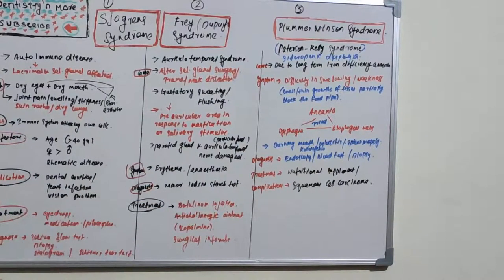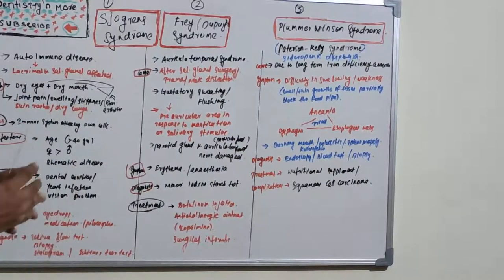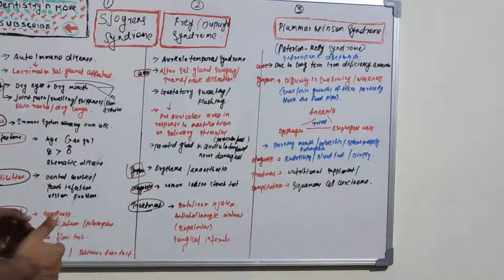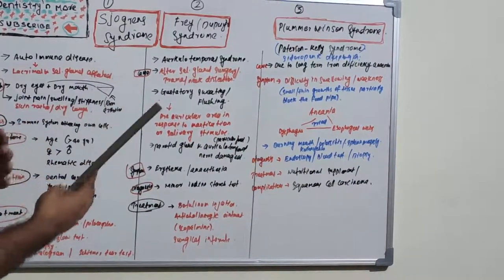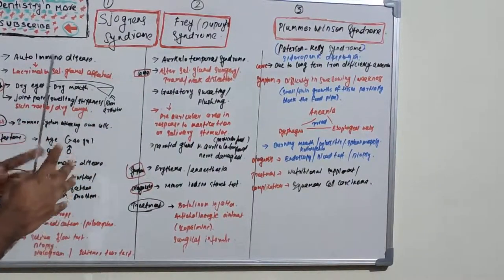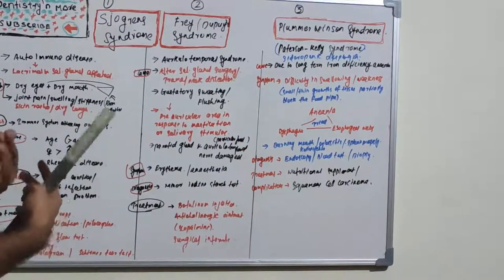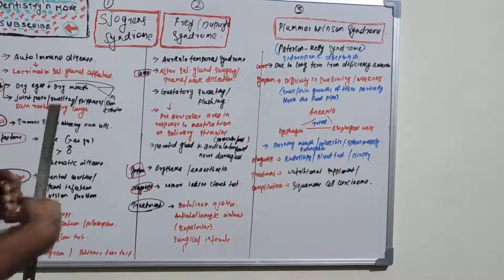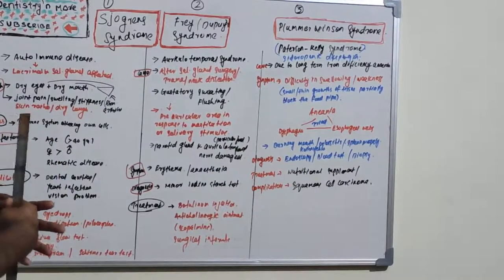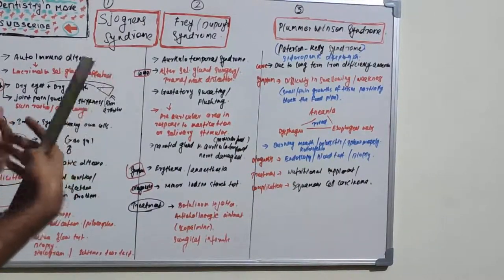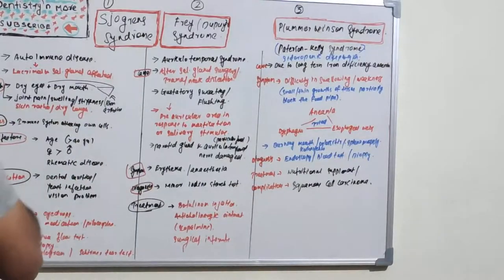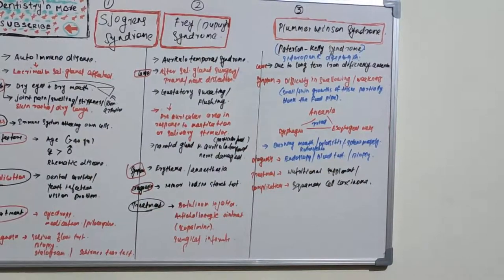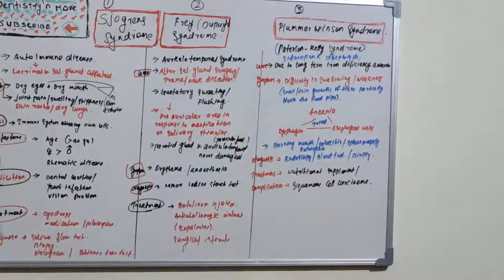Diagnosis is basically by endoscopy, blood test, and biopsy. Treatment is mainly nutritional intervention because it is iron deficiency anemia. Nowadays, iron deficiency anemia and Plummer-Vinson syndrome are quite rare because nutritional deficiency is not very much heard of. The complication related to Plummer-Vinson is squamous cell carcinoma.